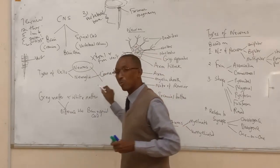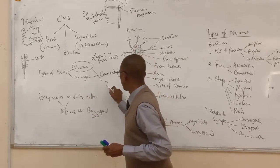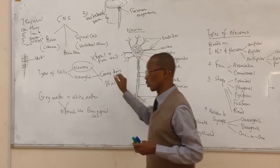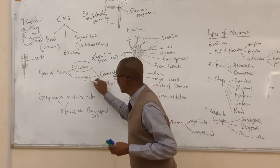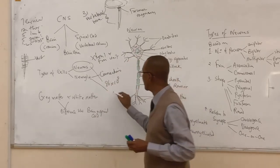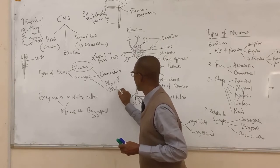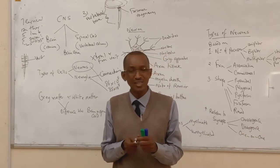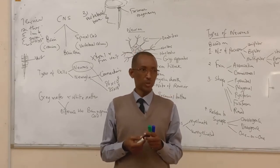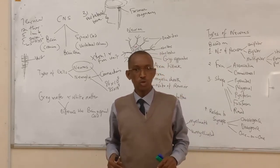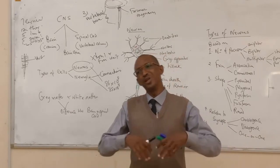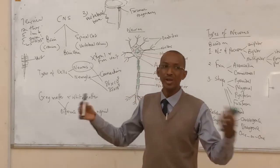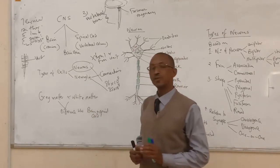The number of neurons in the nervous system is about 86 billion — not a million, but 86 billion neurons in our brain and other parts of the nervous system. The neuroglial cells are slightly lower in number, about 85 billion. Combined, that gives us over 160 to 171 billion cells in our nervous system, because we are multicellular organisms.